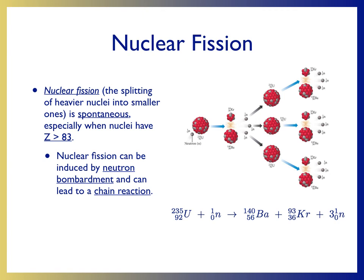Also produced is three neutrons. These three neutrons can then be released, can then bombard three other uranium-235 nuclei, forming more products and more neutrons. These neutrons can then bombard other uranium-235 nuclei.